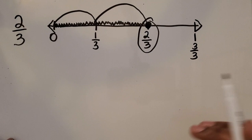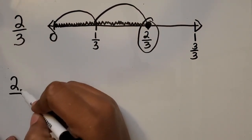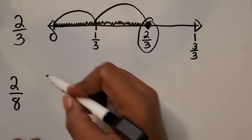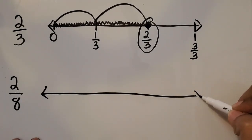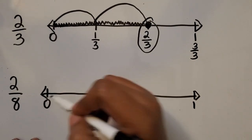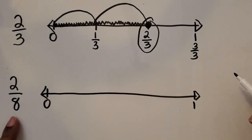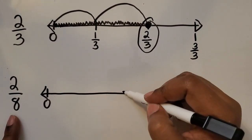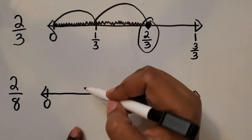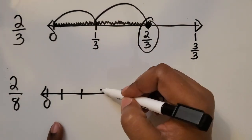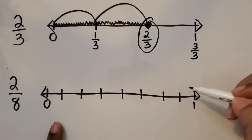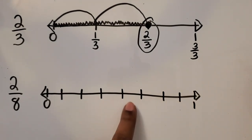Let's do another example. Let's represent two-eighths — same numerator but different denominator. I'm going to draw the same size whole, still representing one whole, going from zero to one whole. Now I want to partition my number line into eight equal parts. I'll start by partitioning it in half, and then for each half I'll partition those in half to make fourths. Then for each fourth, I'll partition in half again, so now we have eight equal parts.